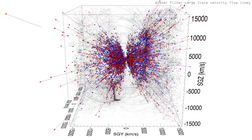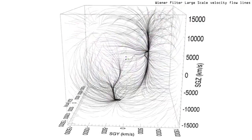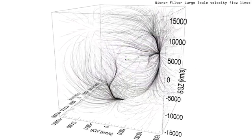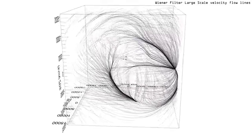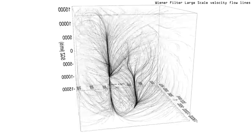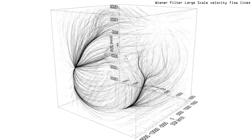The scene now transitions to peculiar velocity flow lines derived from a Wiener filter analysis of the Cosmic flows' two peculiar velocity field. Our galaxy is located at the origin indicated by the three central colored directional vectors.